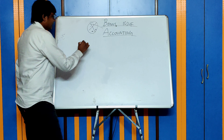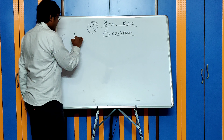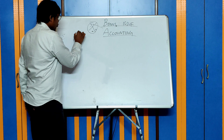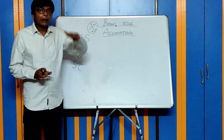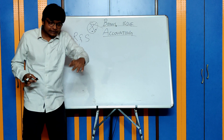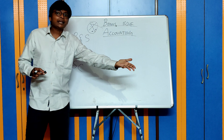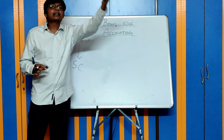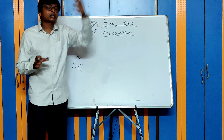Regulation 95 covers time limits. Bonus issue should be completed within 15 days in case only board approval is required. The same should be completed within 60 days in case shareholders' approval is required. So these are the provisions which govern the bonus issue.